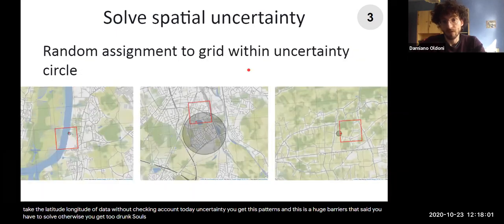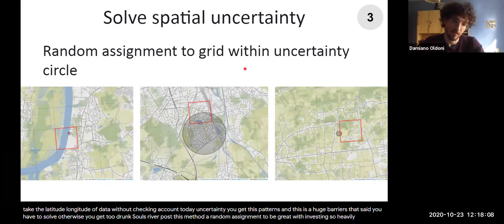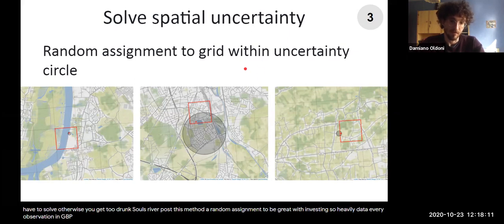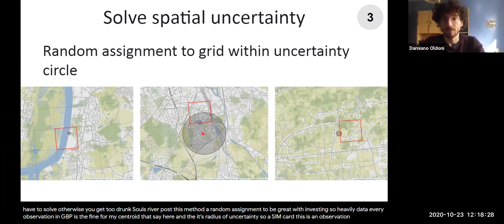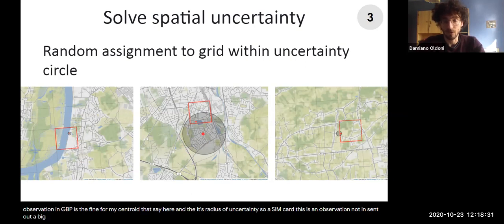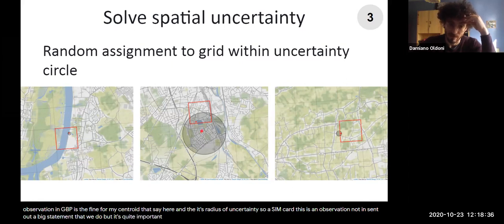We propose this method, which is a random assignment to the grid within the uncertainty circle. So every data, every observation in GBIF is defined from a centroid, let's say here, and its radius of uncertainty. So for us, our observation is a circle. This is an observation, not its centroid. This is actually a big statement that we do, but it's quite important for the rest of the presentation.